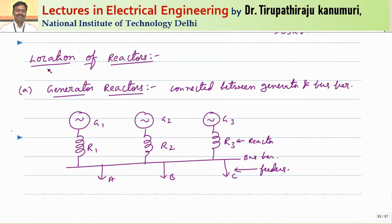Now, where should these reactors be placed? Depending on the location, different types of reactor arrangements exist. The first is called generator reactors, where the reactor is connected between the generator and the bus bar. In this arrangement, the reactor continuously carries the rated current from the generator to the bus bar, resulting in continuous voltage drop and power loss.